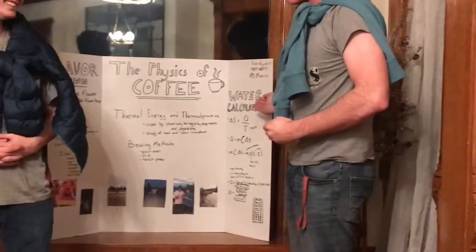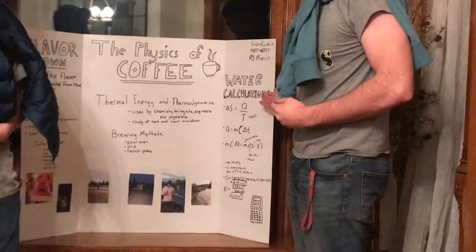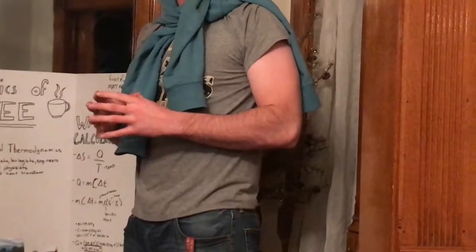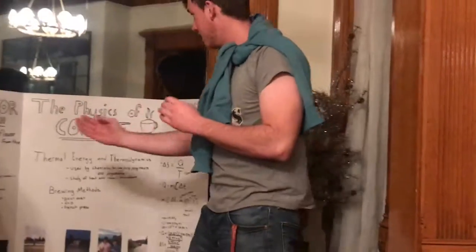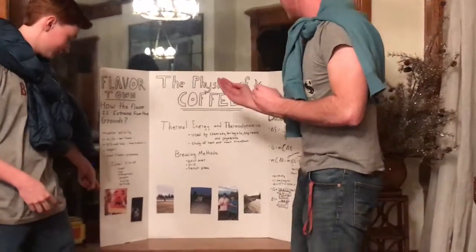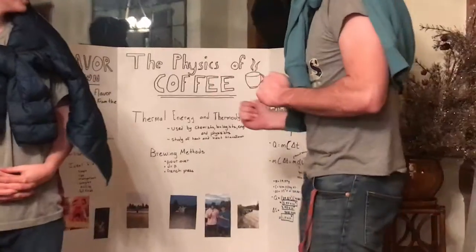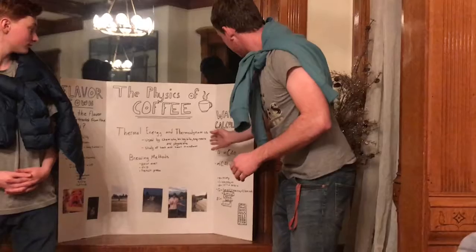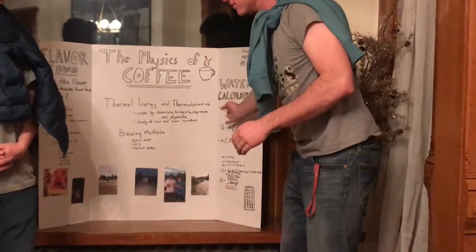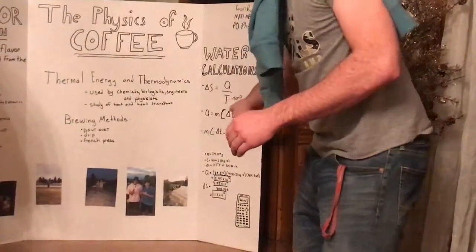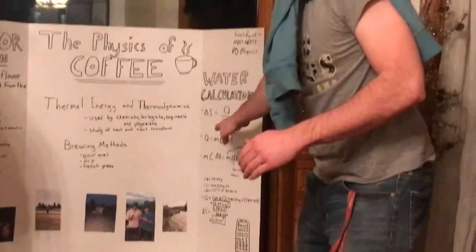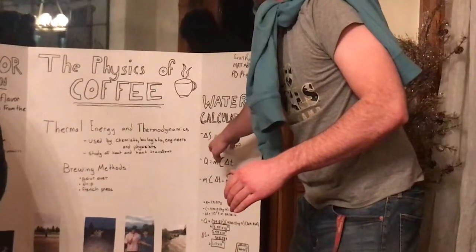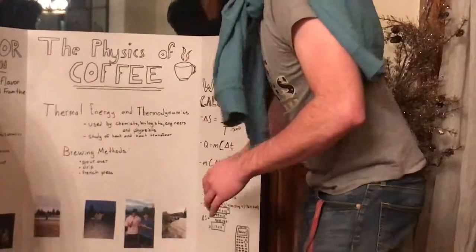Hey gang, and welcome back! This is the equations for the calculations of the heat of the water. The heat is very important because it helps extract the flavor from the particulates of the coffee. So, in order to figure out how much heat we needed, we're going to have delta S, Q, and T. T is the temperature, Q is heat.